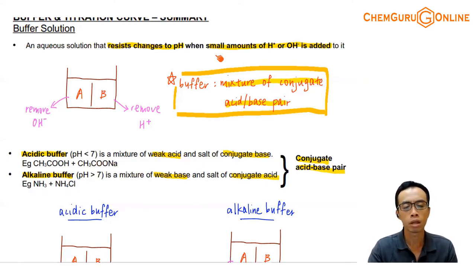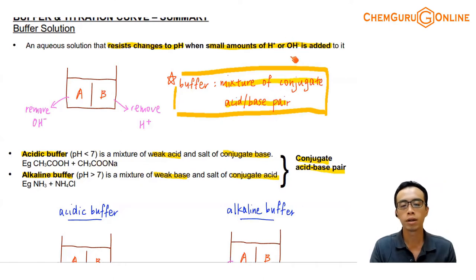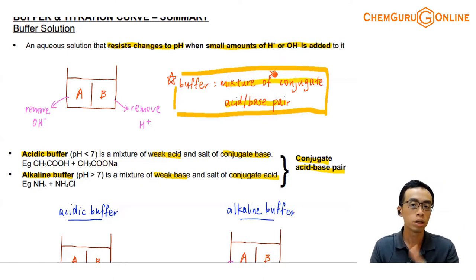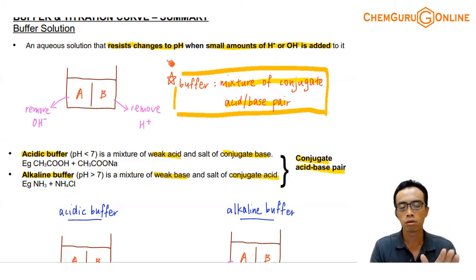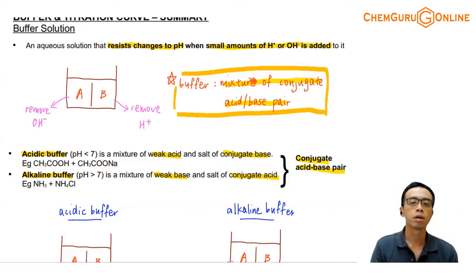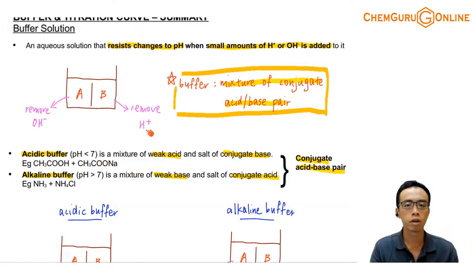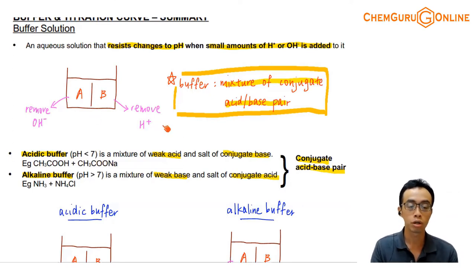If I have a solution that can resist changes to pH when you add small amounts of H+ or OH-, then when you add H+ to a solution, it will tend to make the solution acidic — it will tend to make the pH decrease. So if this solution can maintain pH, it means that it must be able to remove the H+. That tells me that inside this solution, there must be a base that can remove the H+. When you add the H+, the base will remove it, and therefore it will maintain pH. So a base must be present inside this buffer solution.